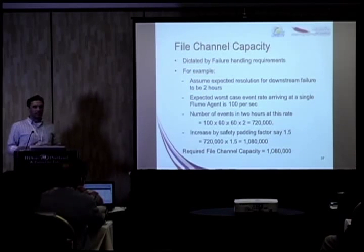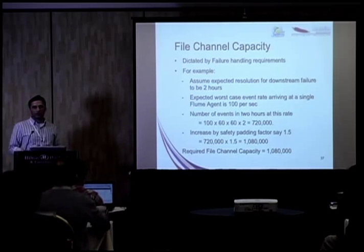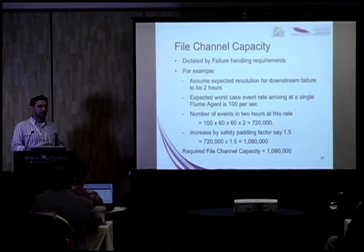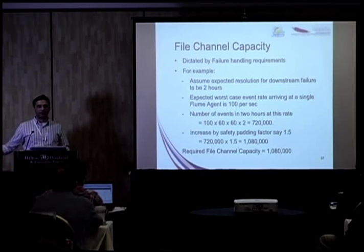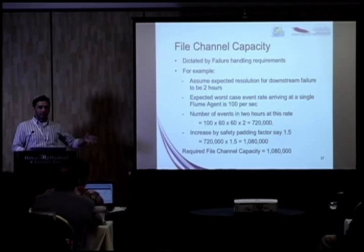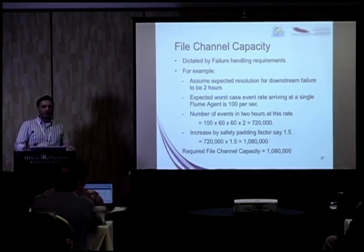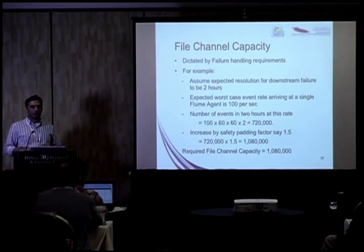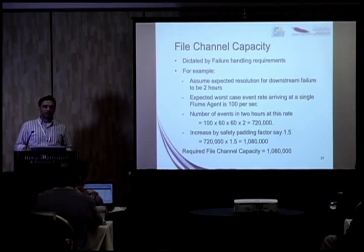The next thing is ensuring you have enough failure tolerance capacity. Your file channel or memory channel — whatever channels you're using — should have enough capacity to hold all event batches in case of downstream failures. A simple back-of-the-envelope calculation: if this is my expected worst-case rate and I need to be down for two hours, how many events must I store in the channel? That gives you the channel size. If it's a file channel, we encourage using multiple different spindles — that increases the throughput of the file channel.